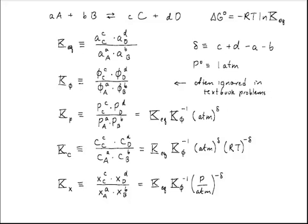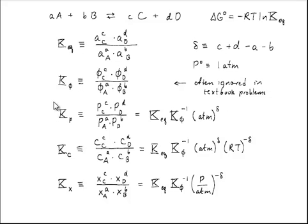Quite often you'll find equilibrium constants reported with units — for example, with units of pressure if you're talking about ratios of pressures raised to the stoichiometric coefficients, or with units of concentration if you're talking about concentrations raised to the stoichiometric coefficients, or they can be dimensionless, but sometimes those are not the true equilibrium constant — they are the ratio of mole fractions.